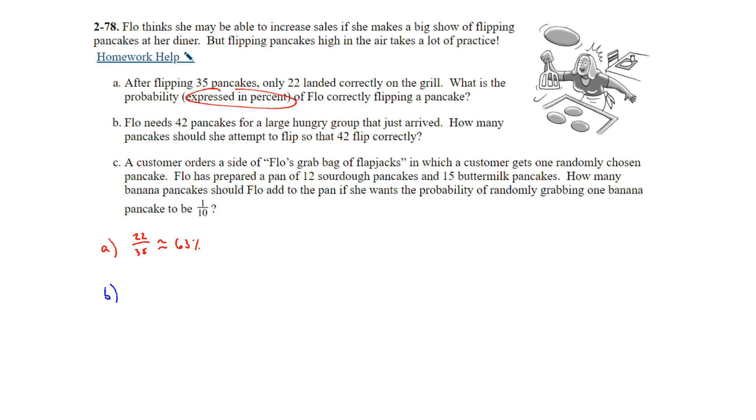Part B. Flo needs 42 pancakes for a large hungry group that just arrived. How many pancakes should she attempt to flip so that 42 flip correctly? Well, we know that 22 out of 35 is what she is currently at. If she wants to flip 42 correctly, then how many will she need to flip? So I did 22 pancakes correctly over a total of 35 is equal to 42 pancakes correctly over what amount? And then we can solve this by multiplying by 35x to both sides. And that would cancel the 35 on the left, but then put the x there. On the right, the x cancels, and then you're going to get 42 times 35. And then you can take that answer and divide by 22. And x will be about 67 pancakes.